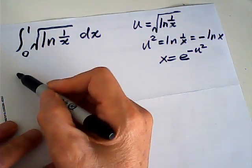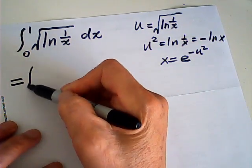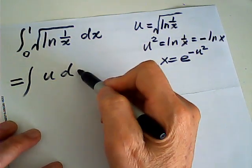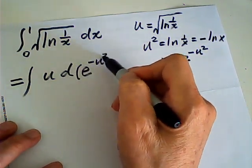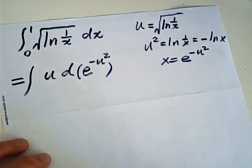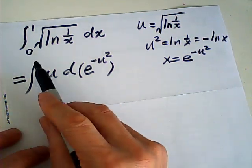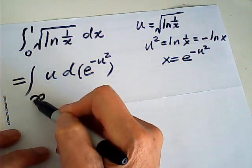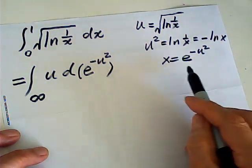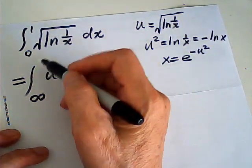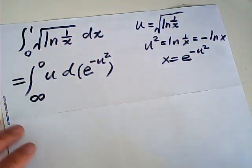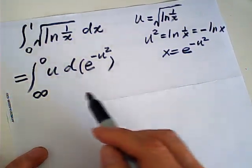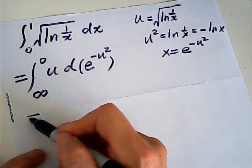Then my integral becomes - this is u - dx is d of e to the negative u squared. When x is 0, then u is infinity. When x is 1, then u is 0. Now here I can use integration by parts, u dv. So this one is equal to...